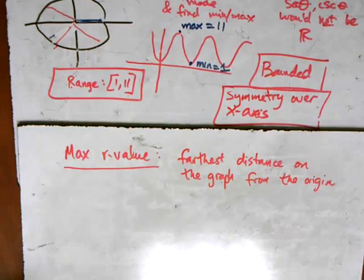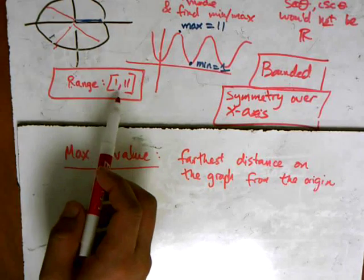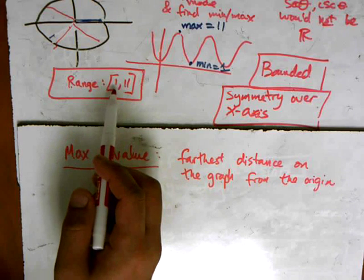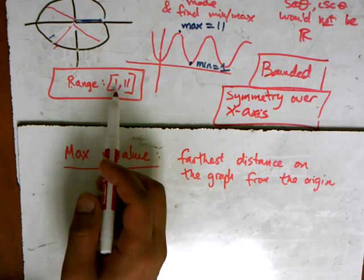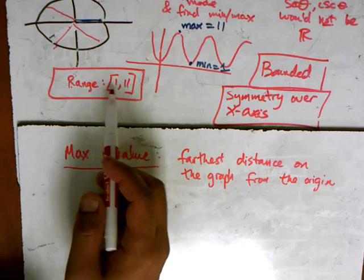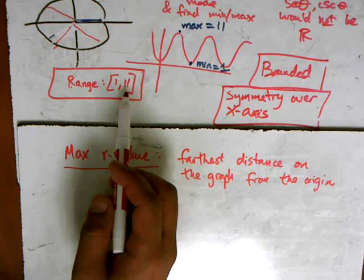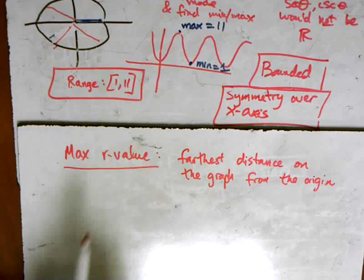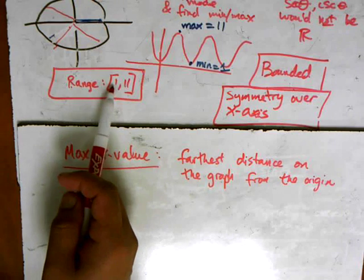So the best way to do that is just looking at the range here for the possible values of r. The smallest number represents how far I can get from it. And the biggest number in this case also represents that. Now in some scenarios, this number might be a negative.